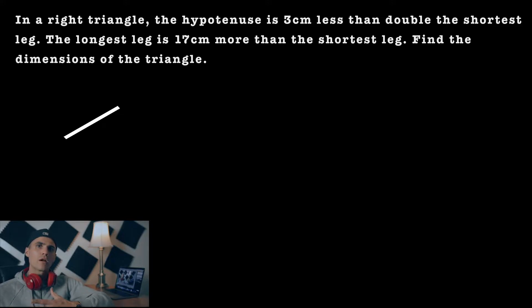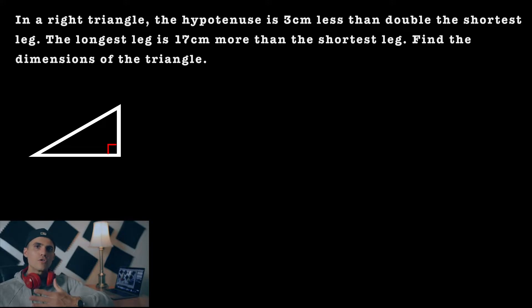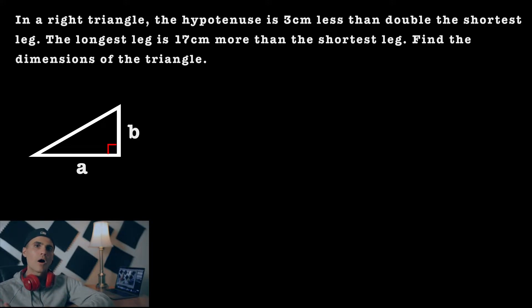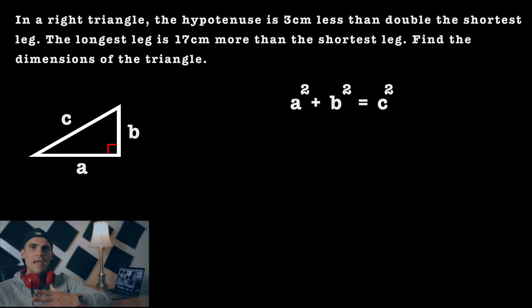Now, whenever you're dealing with a right triangle, if you label the two legs as a and b, and then label the hypotenuse as c, the Pythagorean theorem holds — meaning that a squared plus b squared is equal to c squared.